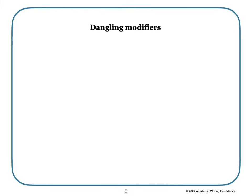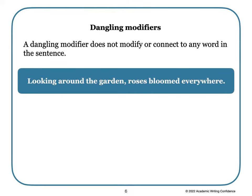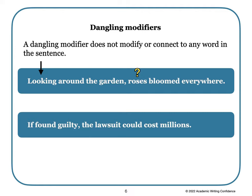Now let's talk about dangling modifiers. A dangling modifier does not modify or connect to any word in the sentence — it is just dangling with nothing to connect it with. For example: 'Looking around the garden, roses bloomed everywhere' — who was looking around the garden? 'If found guilty, the lawsuit could cost millions' — who could be found guilty, the lawsuit? The modifying phrase does not connect to anything in the sentence; this is what we call a dangling modifier.